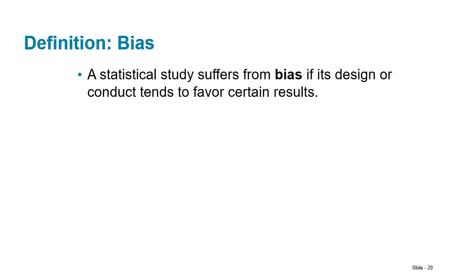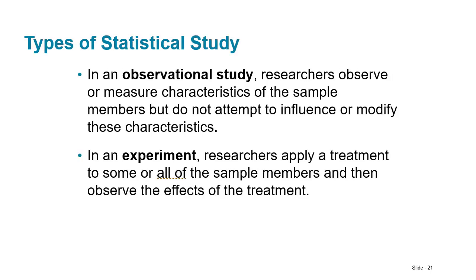Bias happens whenever the design of a study favors certain results, usually from bad sampling techniques. In an observational study, researchers observe or measure characteristics of a sample without influencing them — a fly-on-the-wall approach. In an experiment, researchers apply a treatment to some members and a placebo to a control group, then look at the effects between the two groups.